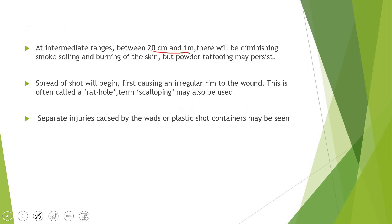At intermediate ranges between 20 centimeters and 1 meter, there will be diminishing smoke soiling and burning of skin, but the powder tattooing may persist. The language used is intentionally ambiguous — diminishing smoke soiling and diminishing burning — because these features do not disappear entirely, they just reduce with increasing range.